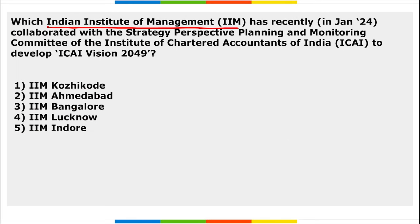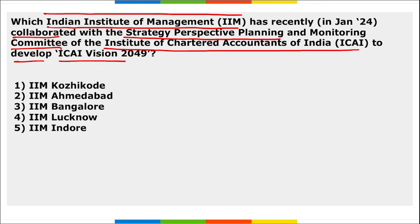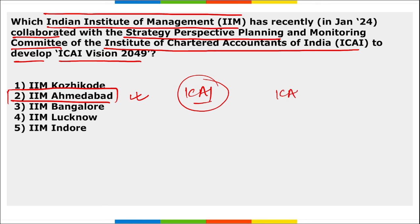IIM Ahmedabad recently collaborated with the Strategy, Perspective, Planning and Monitoring Committee of the Institute of Chartered Accountants of India (ICAI) to develop ICAI Vision 2049. This initiative aims to make ICAI a globally recognized leader in the field of accountancy.